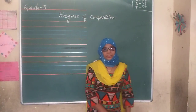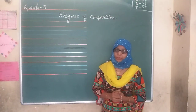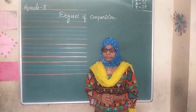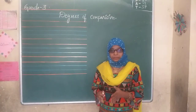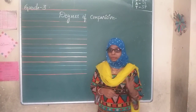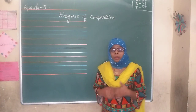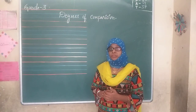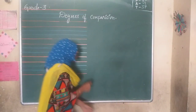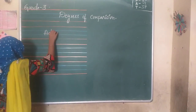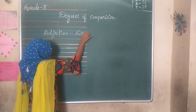Good morning children. Today we are going to learn about adjectives. What is an adjective? We have learned this in our previous classes also. The words which describe a noun or a pronoun — which say something or give additional information about a noun or pronoun — they are called adjectives. An adjective is nothing but a describing word.